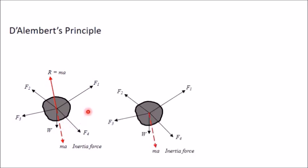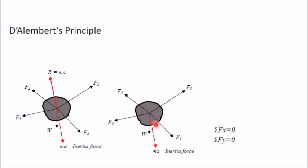This inertia force is imaginary — it is not actually acting on the body. It is applied only on the sheet of paper so that we bring this body into equilibrium, and after that we can apply equations of equilibrium, that is sigma Fx equal to 0 and sigma Fy equal to 0. So if I take these five forces F1, F2, F3, F4, and W, and apart from that apply this extra force Ma, then this body will be in equilibrium, and by applying these two equations, any two unknown quantities can be determined.